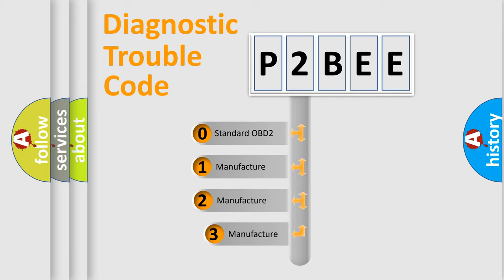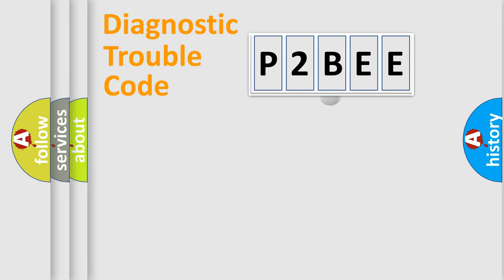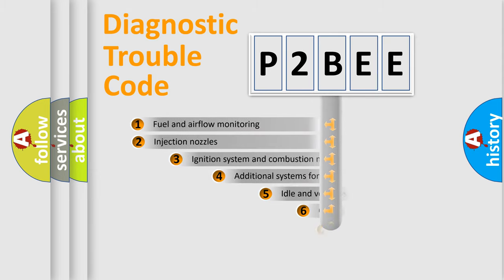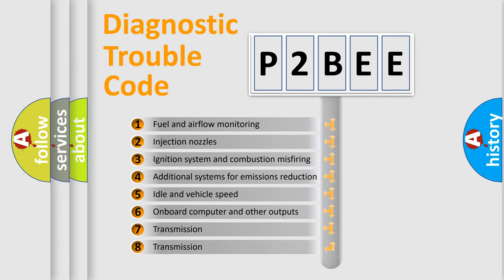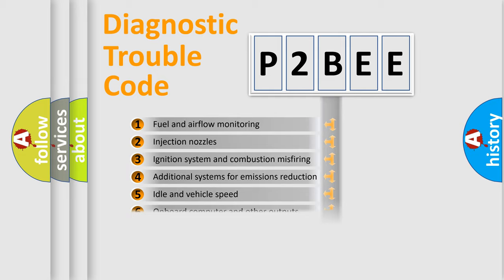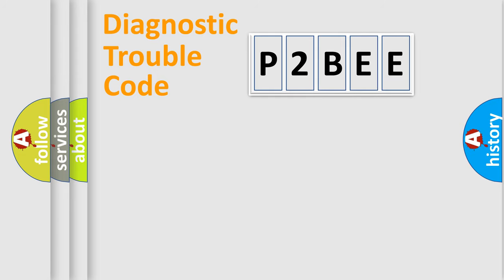If the second character is zero, it is a standardized error. In the case of numbers 1, 2, or 3, it is a manufacturer-specific error. The third character specifies a subset of errors. The distribution shown is valid only for the standardized DTC code.